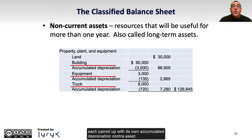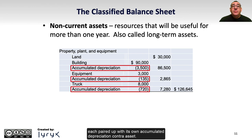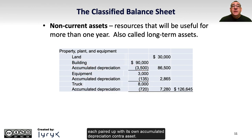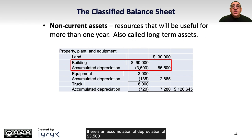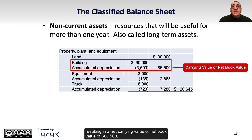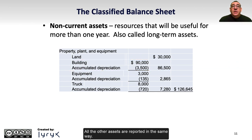Each PPE item is paired up with its own accumulated depreciation contra-asset. So the building, for example, had an original cost of $90,000, and up to December 31st, 2023, there is an accumulation of depreciation of $3,500, resulting in a net carrying value, or net book value, of $86,500. All the other assets are reported in the same way.